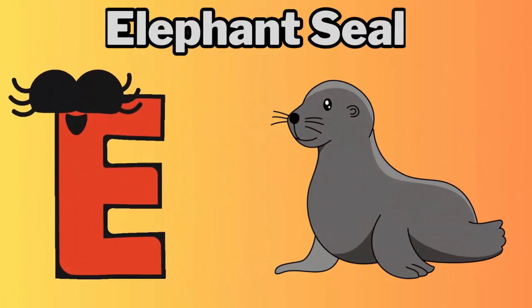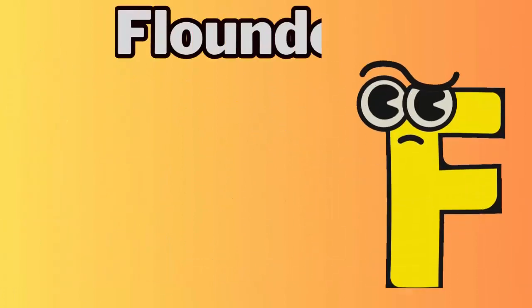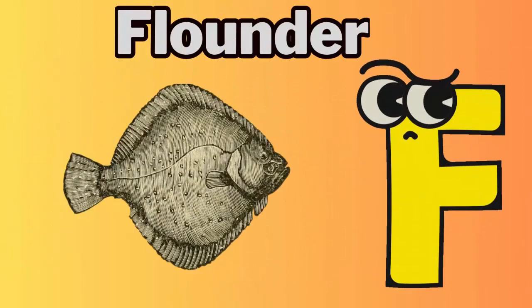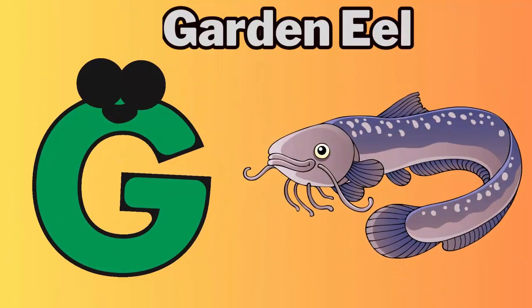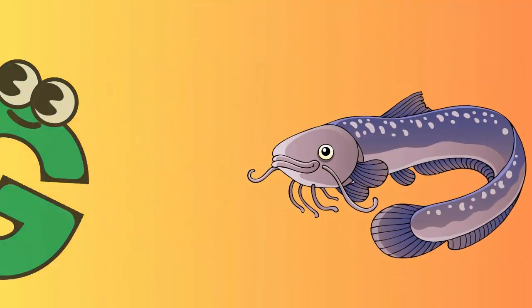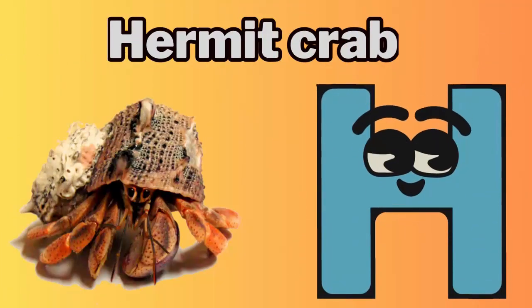E. E for elephant seal. F. F for flounder. G. G for garden eel. H. H for hermit crab.